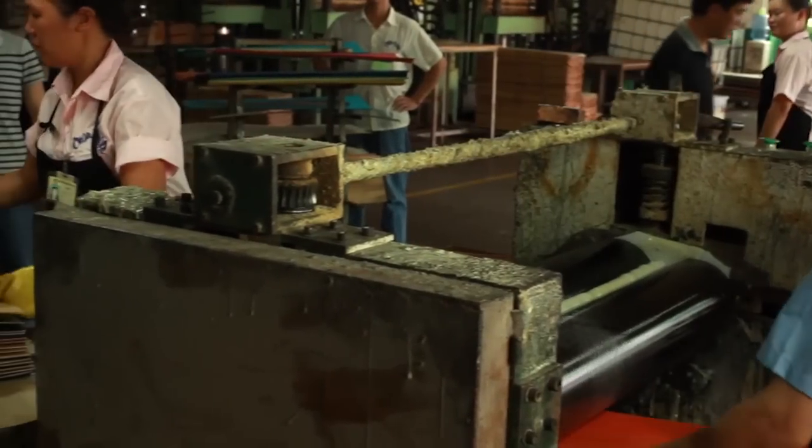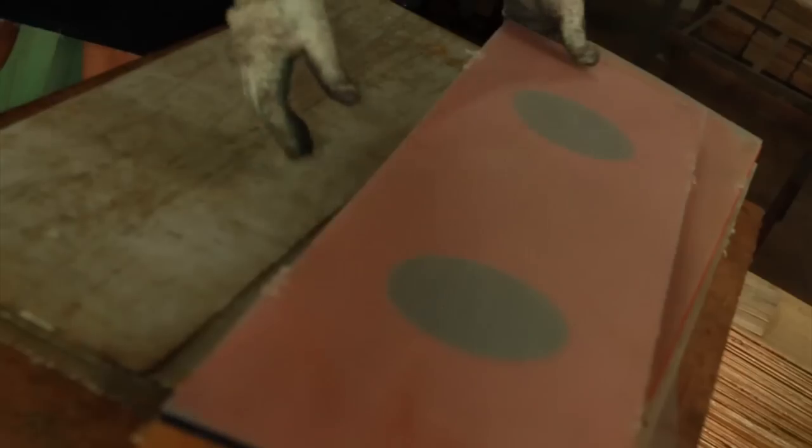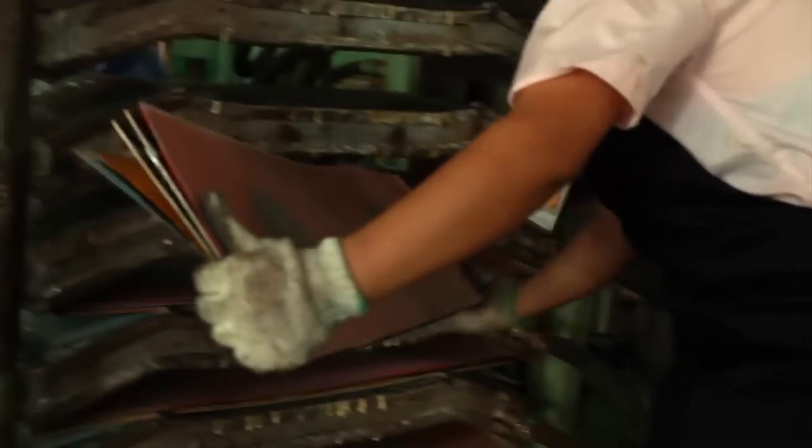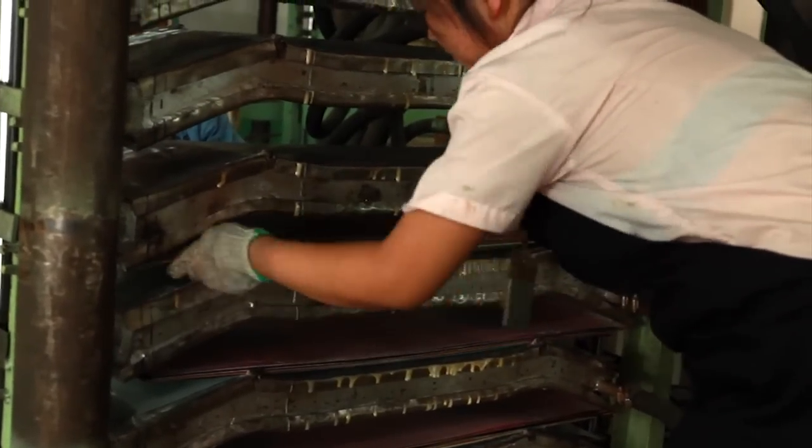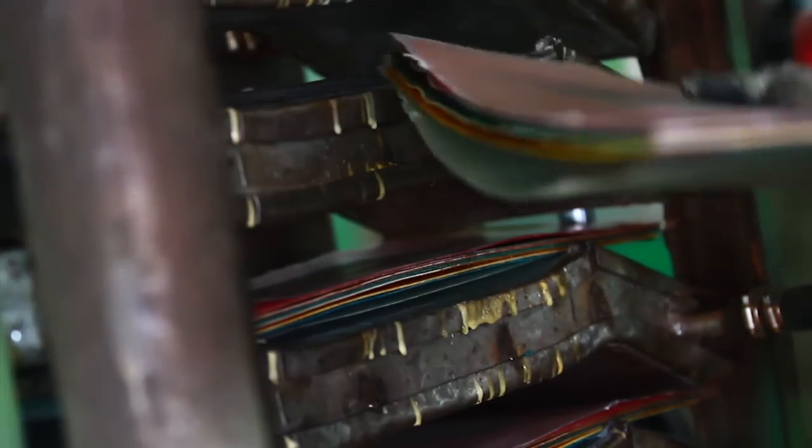The adhesive used exclusively by DSM is known as resin. This unique mixture replaces traditional water-based glues, which have shown to break down easier over time. After resin is applied, the veneers are ready to enter the press.